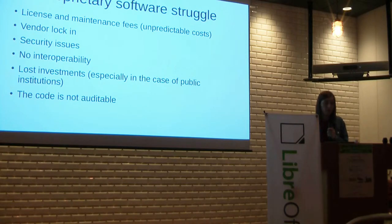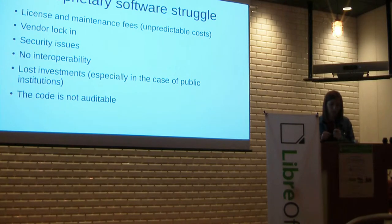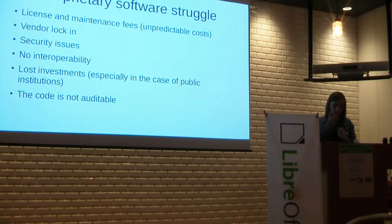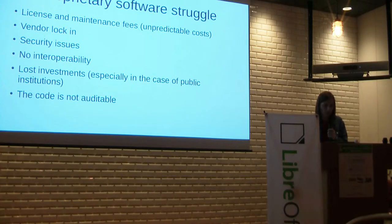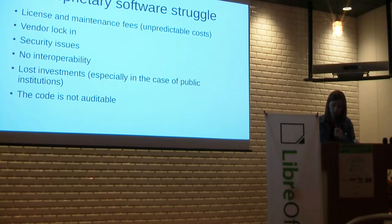There are also security issues, lack of interoperability, and lost investments — because after a license has expired you need to remake the investment from the beginning. This can be especially critical in the case of public institutions which are spending public money to acquire these licenses. The code is not auditable either, which brings us back to security issues because it's always the same group of people working to improve the code. It might also cause privacy issues because you don't know the source code, so you don't really know where your information or the content of your document is going — again very critical especially for public institutions which handle a lot of citizen data.